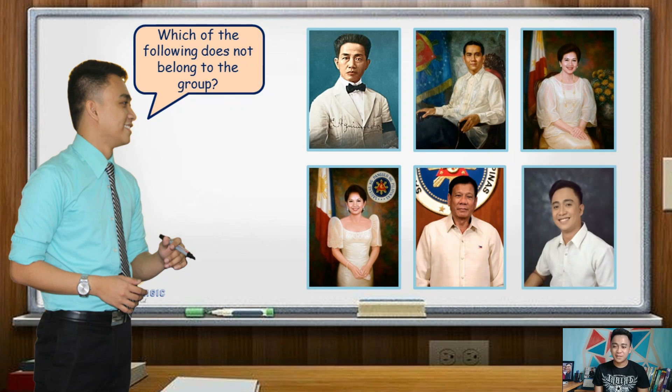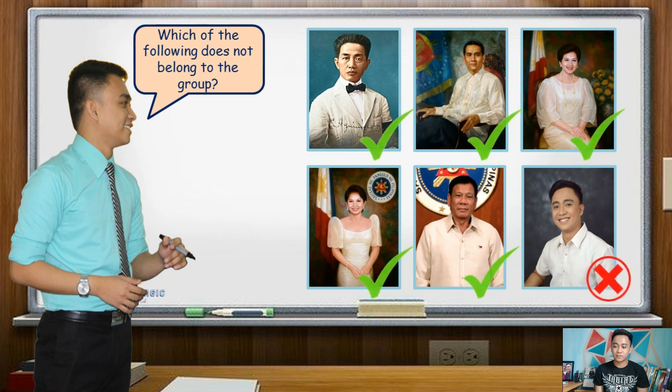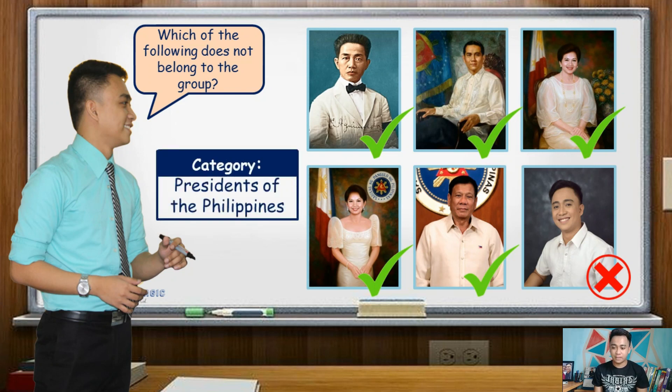Obviously, five of these people are presidents of the Philippines, except one, that is Mr. Christopher Coronado. So observe that in this given example, it has a specific category, that is presidents of the Philippines. So it's easy for us to identify which is different. This makes the collection well-defined.